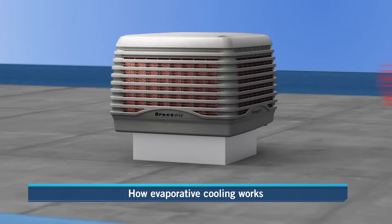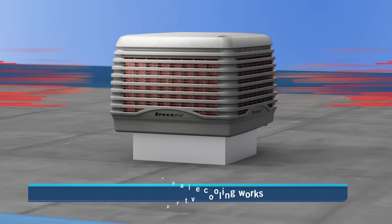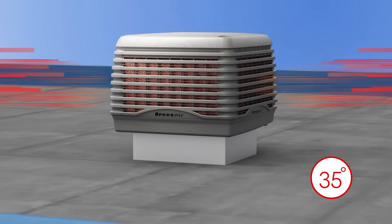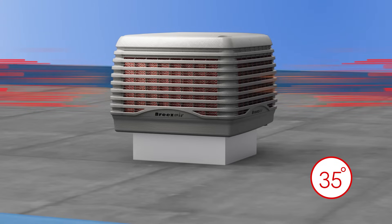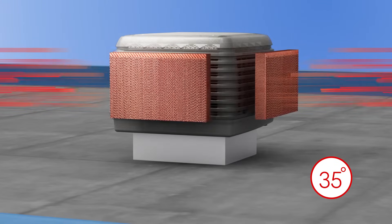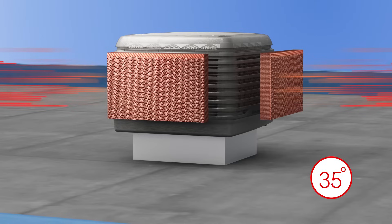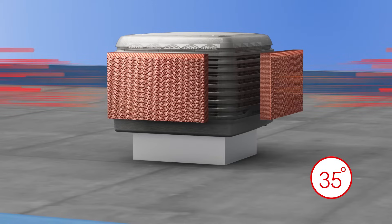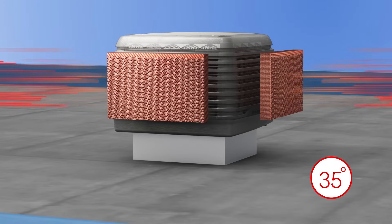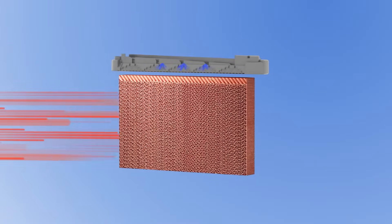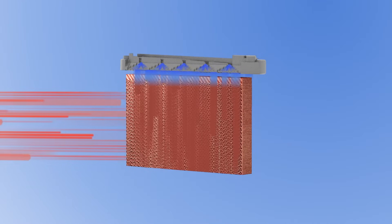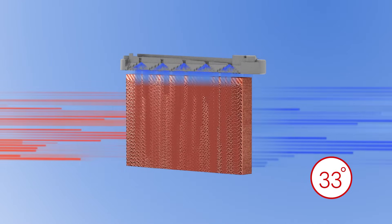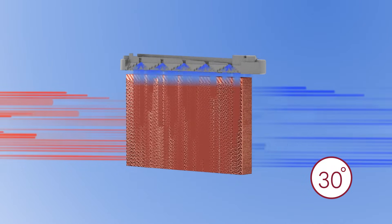As the name suggests, an evaporative air conditioner uses the principle of evaporation to cool air. The process begins when hot and dry outside ambient air is drawn through a series of water-saturated cooling pads. This hot incoming air stream provides the heat energy for evaporation. As it passes through the cooling pads, the water evaporates and the heat in the air is absorbed, which lowers the temperature of the air.